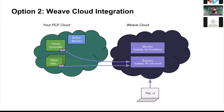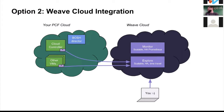For Weave Cloud integration there's another component called Monitor — basically a highly available Prometheus deployment, called Cortex. It's scalable and you don't have to set up anything. You can use it to monitor your Kubernetes cluster or in this case Cloud Foundry — it's about metrics and querying them ad hoc using PromQL.